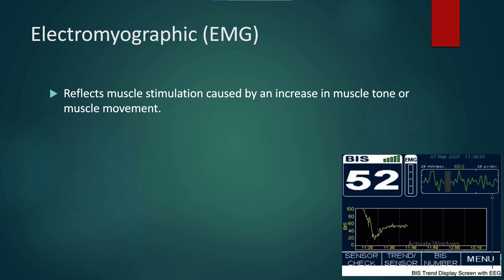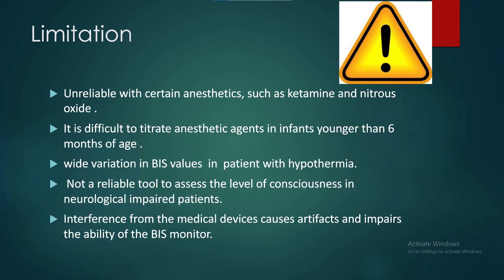Electromyographic, or EMG, reflects muscle stimulation caused by an increase in muscle tone or muscle movement. Limitations include unreliable readings with certain anesthetics such as ketamine and nitrous oxide. It is difficult to titrate anesthetic agents in infants younger than 6 months of age, and there is wide variation in BIS values in patients with hypothermia. It is not a reliable tool to assess the level of consciousness in neurologically impaired patients, and interference from medical devices causes artifacts and impairs the ability of the BIS monitor.